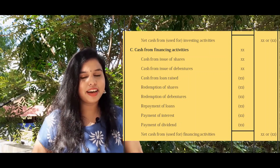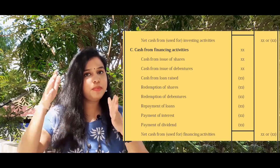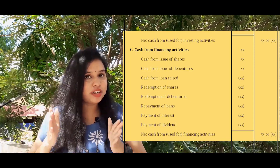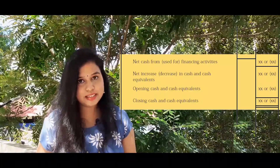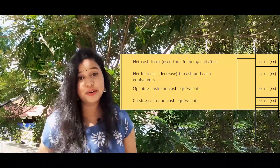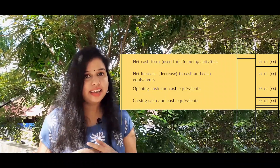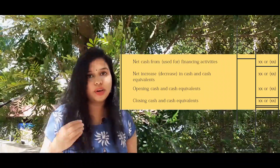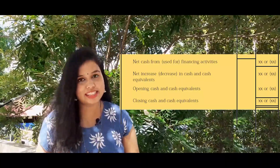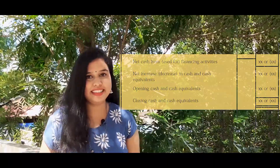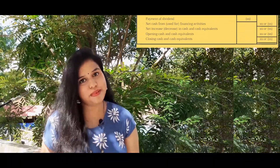We now have three total amounts from the three parts. The sum gives the net increase or decrease in cash and cash equivalents. Adding the opening cash and cash equivalents to this net increase or decrease gives us the closing cash and cash equivalents. This is the complete format of the statement of cash flow.